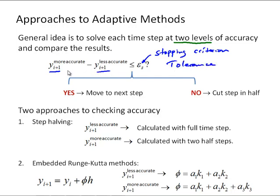If the more accurate solution is not that much better than the less accurate solution, in other words we're within the stopping criterion, then we would move to the next step. If it's not, if it is a lot better, or we haven't satisfied our stopping criterion, then what we would do is cut the step in half and recalculate the time step.